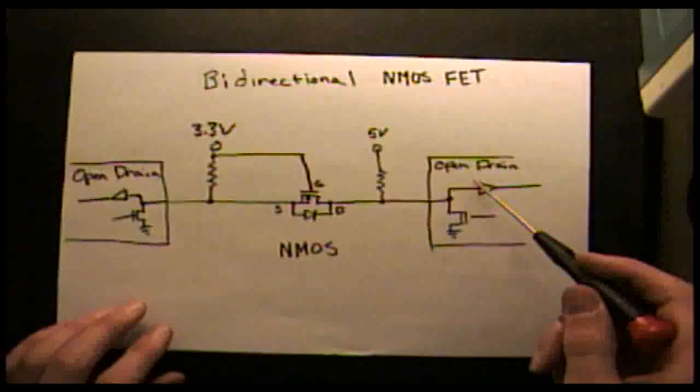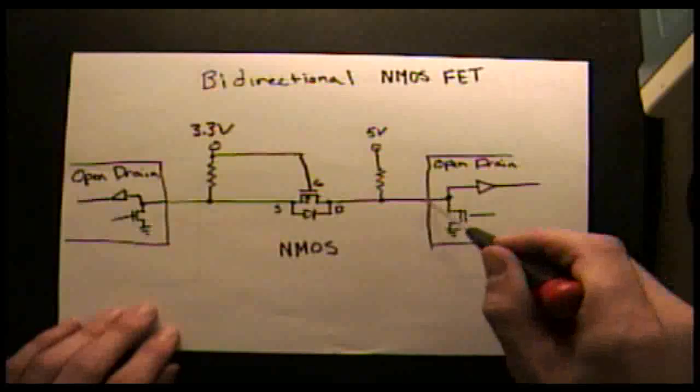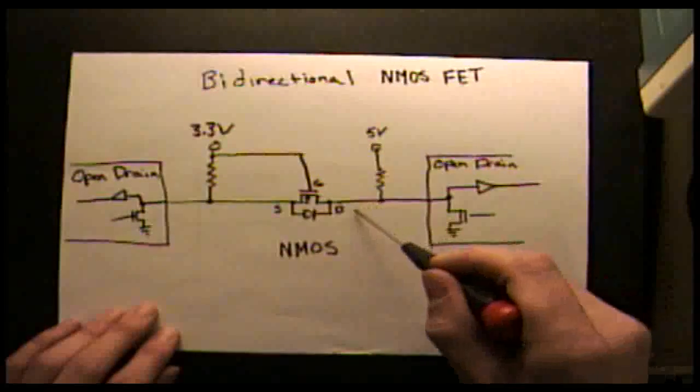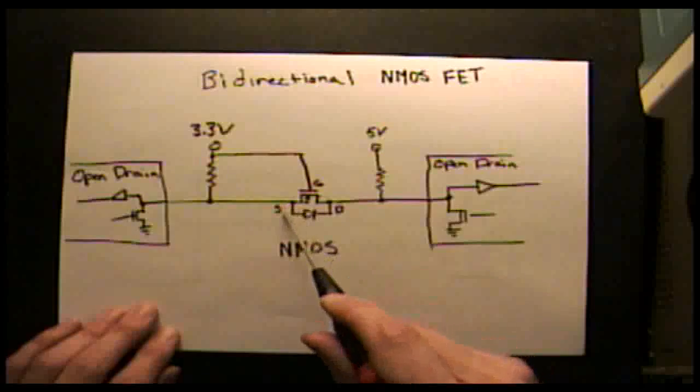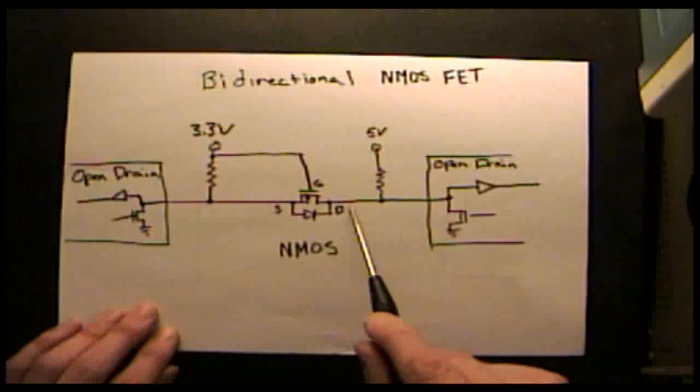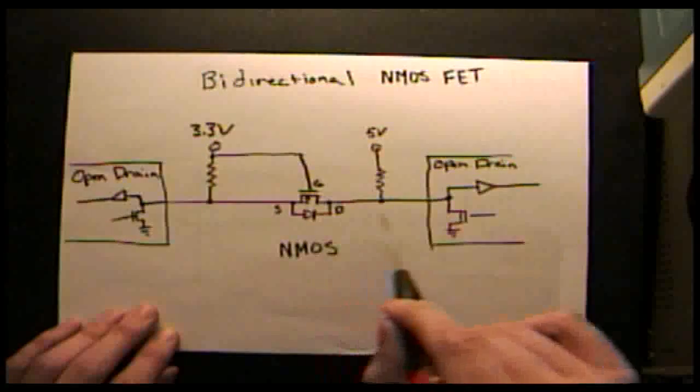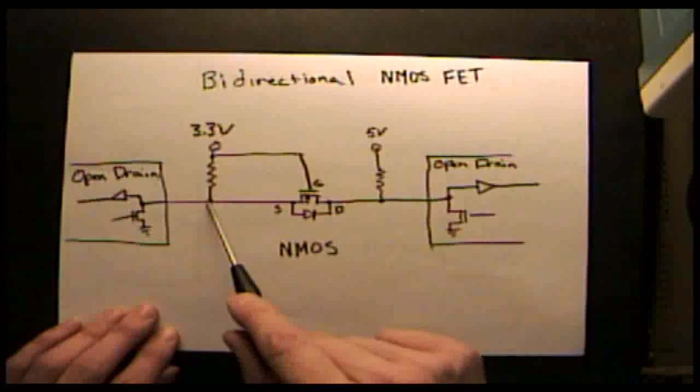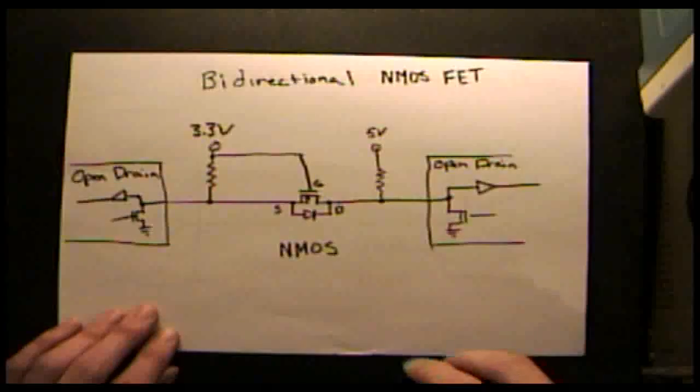When you're signaling from the 5-volt system, you pull down on this side. Through the diode, it starts pulling the source down towards 0, lowering the threshold voltage, which makes the transistor conduct again, pulling the rest of the way down towards 0 volts, pulling the 3 volts down, and signaling to that side.